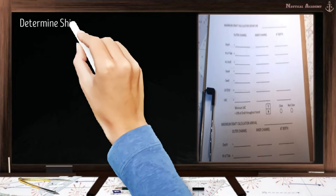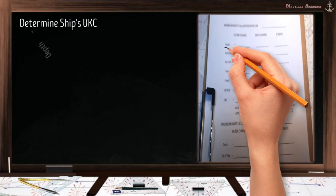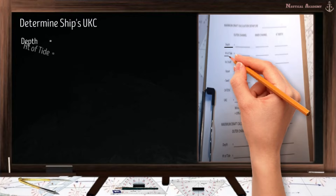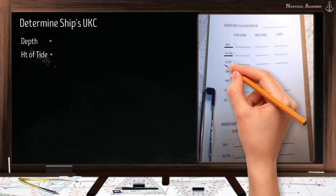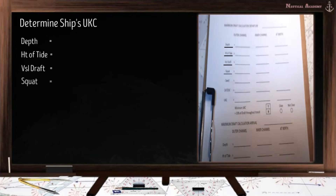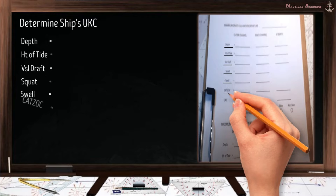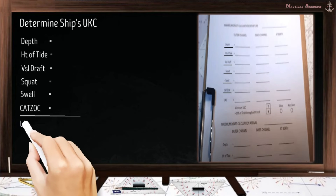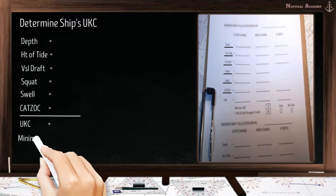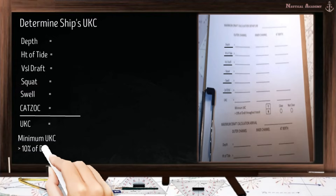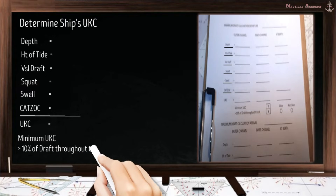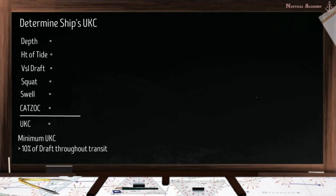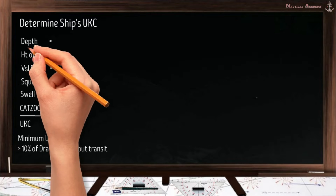To find the UKC, we need the depth — this refers to the depth of the water — then the height of tide, the vessel's draft, the ship's squat, swell, and the category of zone of confidence or CATSOC. The company policy requires that the minimum UKC should be greater than 10% of the ship's draft throughout the transit. Let us deal with these one by one, starting with the depth of the water.